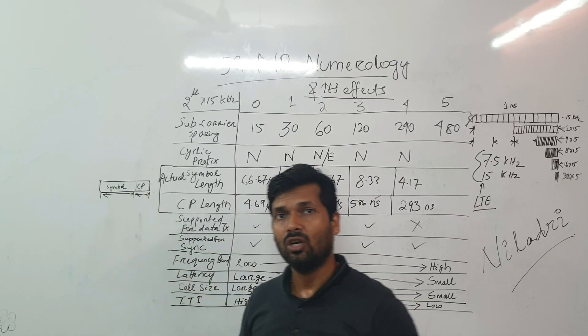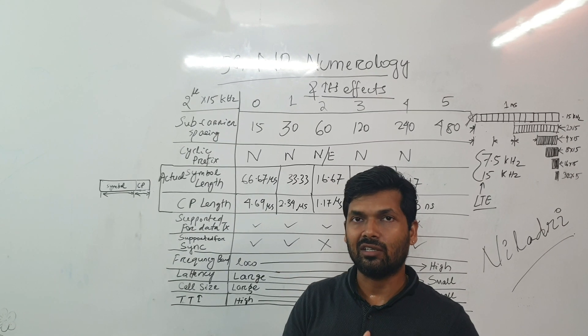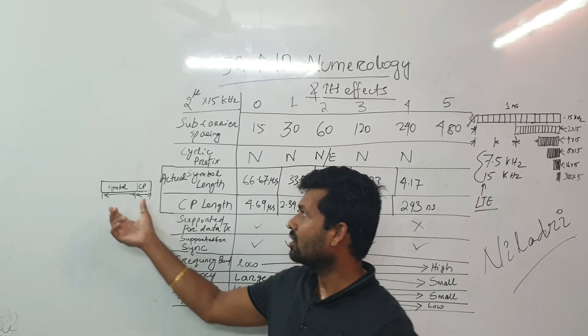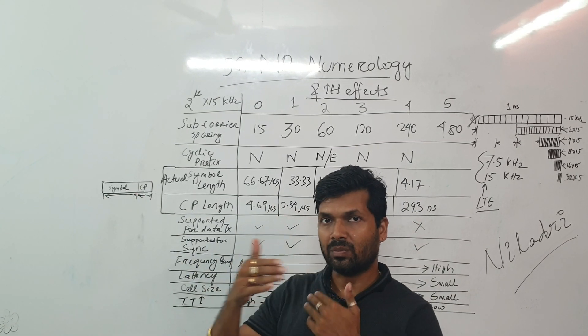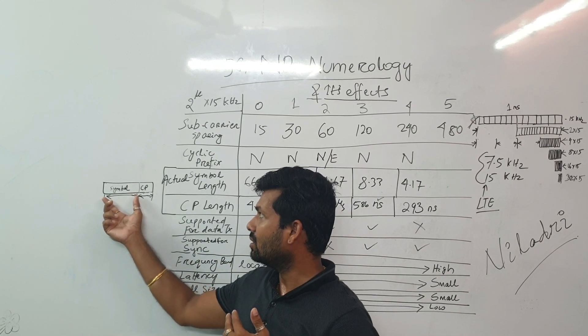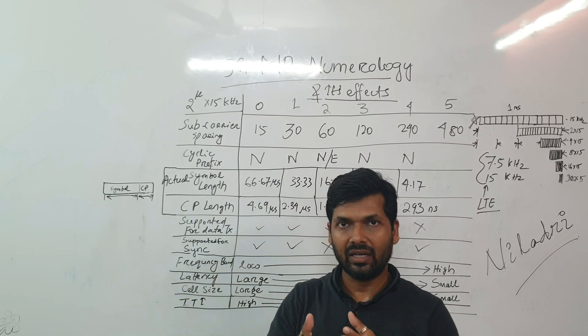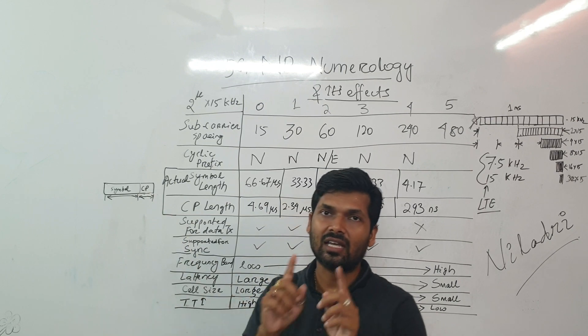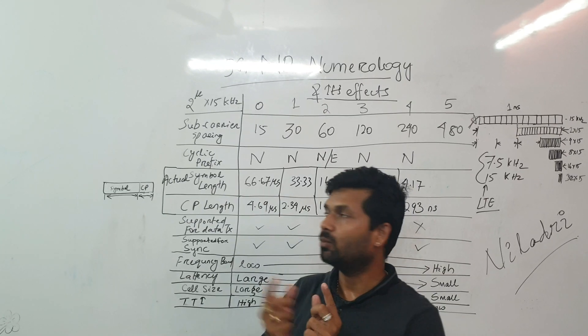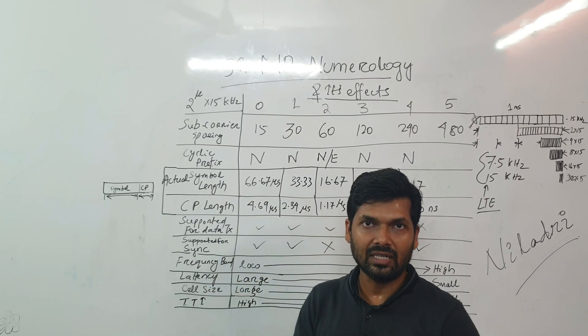This is basically used to mitigate the inter-symbol interference. For the interference so that because of delay if the symbol reach little late or something, so this cyclic prefix will be able to compensate those kind of delays.